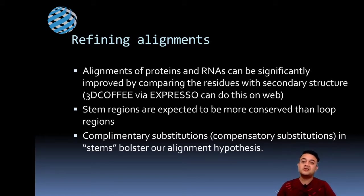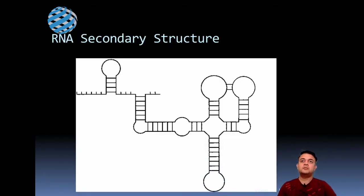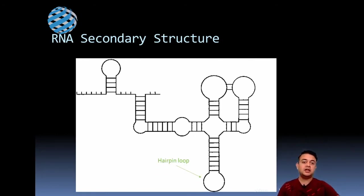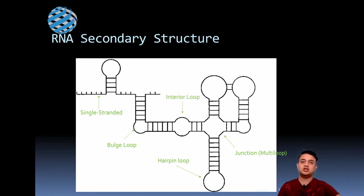Compensatory substitutions in stem regions bolster our alignment hypothesis — remember, alignment is a hypothesis and you need arguments to support it. One good option is to find compensatory mutations in stem regions of RNA molecules. Looking at the secondary structure, you can see stem regions and loop regions. In the stem region, internal base pairing occurs. If one nucleotide changes, the other nucleotide in the pair also has to change — requiring two mutations. In hairpin loop, junction, multi-loop, or bulge loop regions, this is not a problem, but stem regions are the main concern.